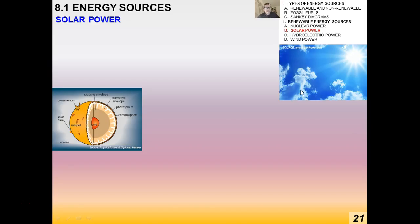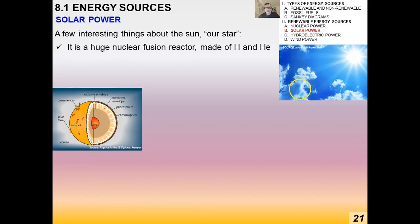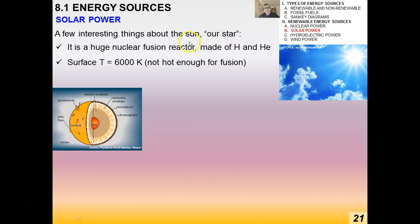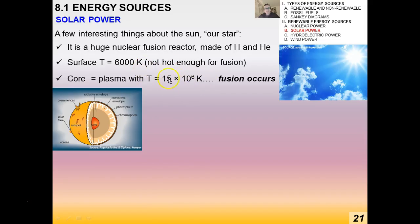Solar power is a really promising way to get energy — the sun is always shining somewhere on earth. The sun is a huge nuclear fusion reactor made of hydrogen and helium. Its surface temperature is about 6000 kelvin, which isn't hot enough for fusion, but in the core it's much hotter where fusion actually occurs. The sun produces about 4 × 10²⁶ joules per second in all directions.